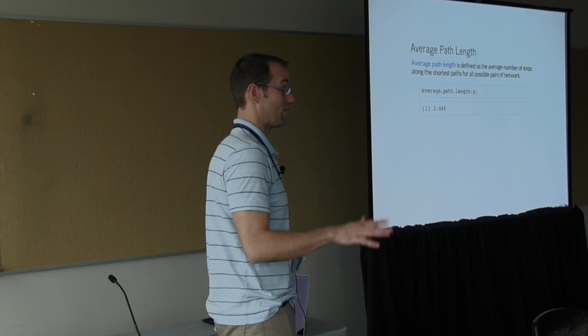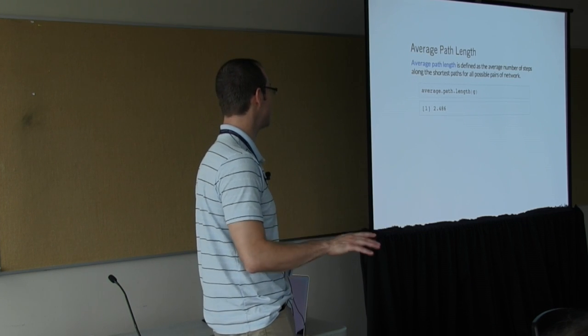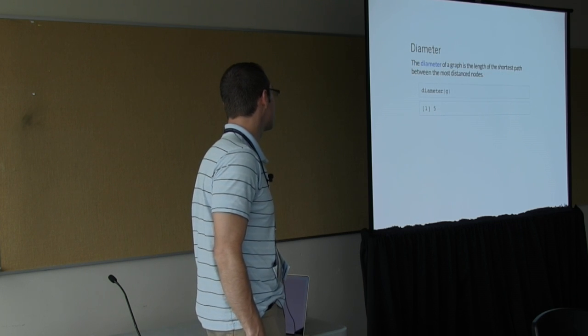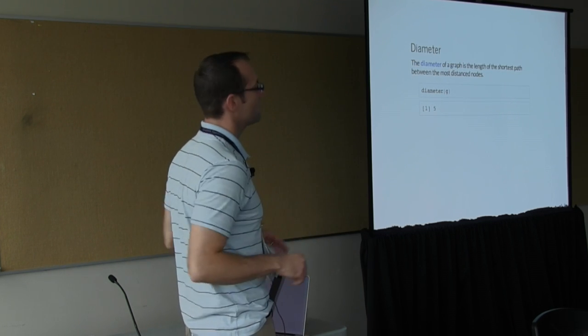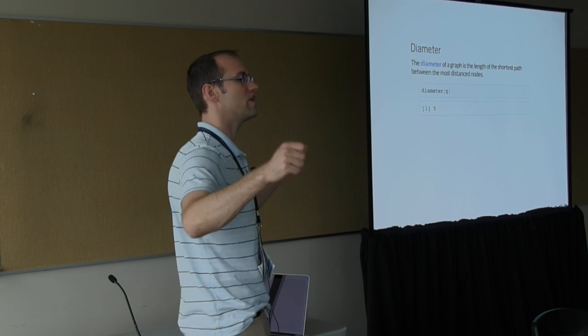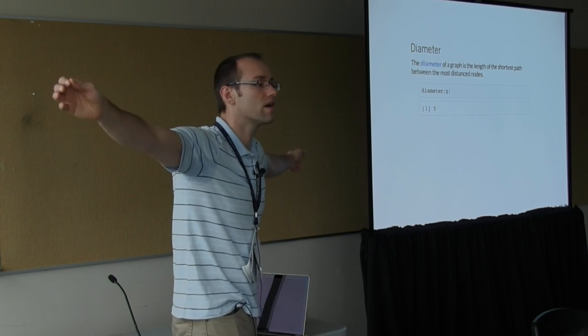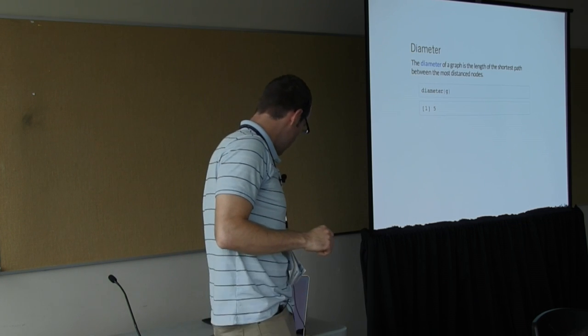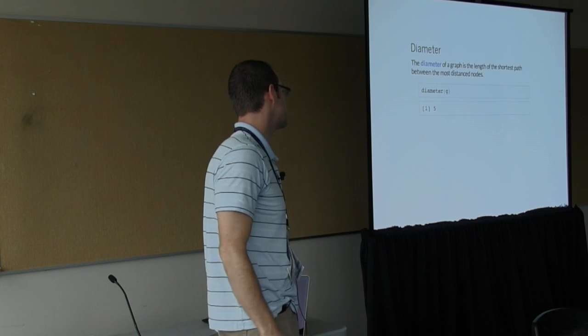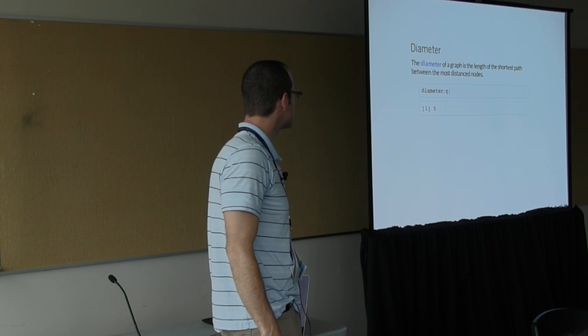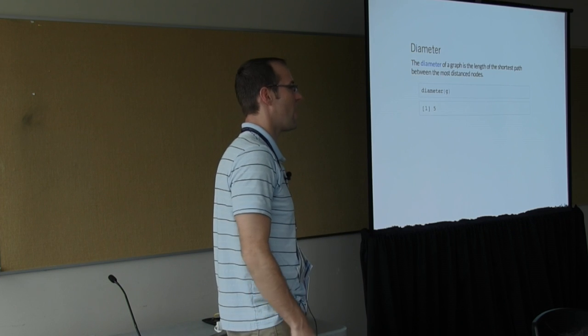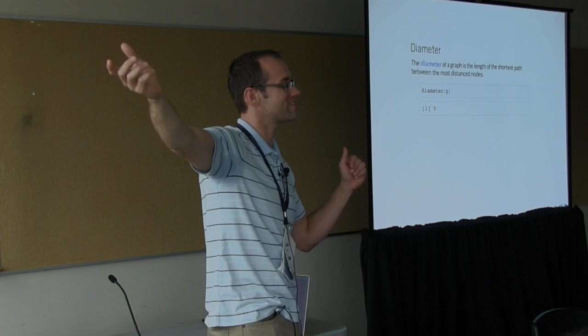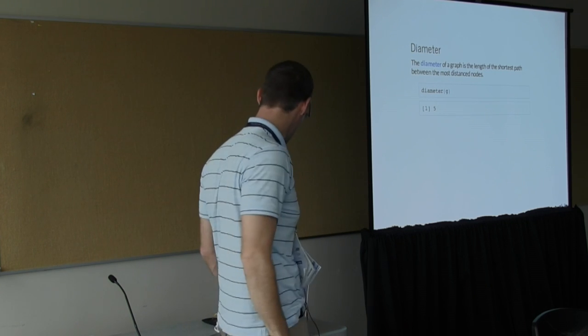Good questions. Yeah, and given the amount of time we have here, I'm happy to field anything as you guys are interested. The diameter of the graph is also interesting. And so this is like the shortest path between the furthest flung points in a graph. Not as computationally intensive, but still kind of non-trivial. In our case, it's five hops from the most far flung nodes.